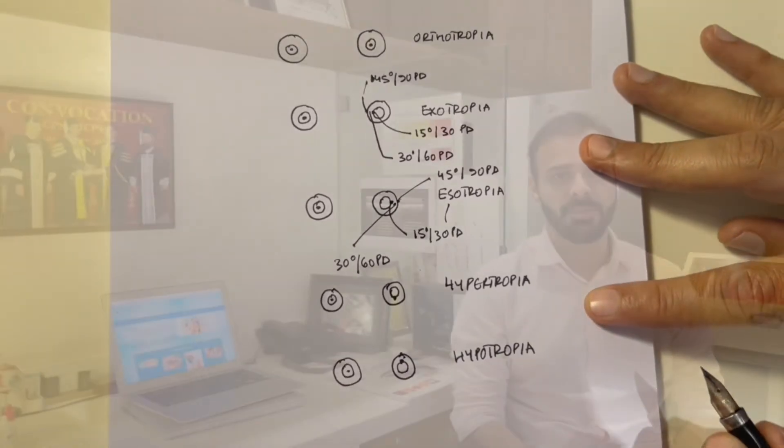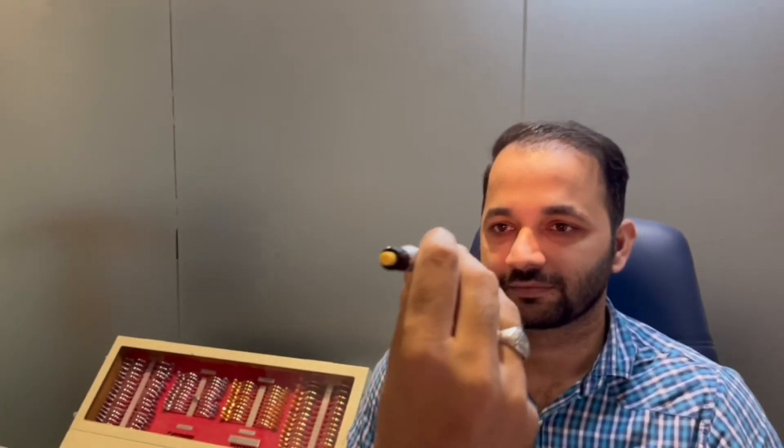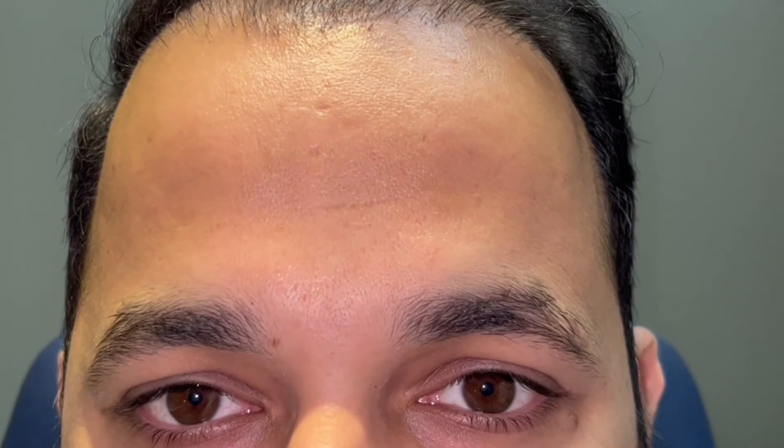To perform the test, you sit in front of the patient, shine a light from a near target, and ask the patient to look at that light. As you can see here, both light reflexes are completely in the center of the pupil in both eyes. In this second example, the light reflex in the left eye is in the center of the pupil.